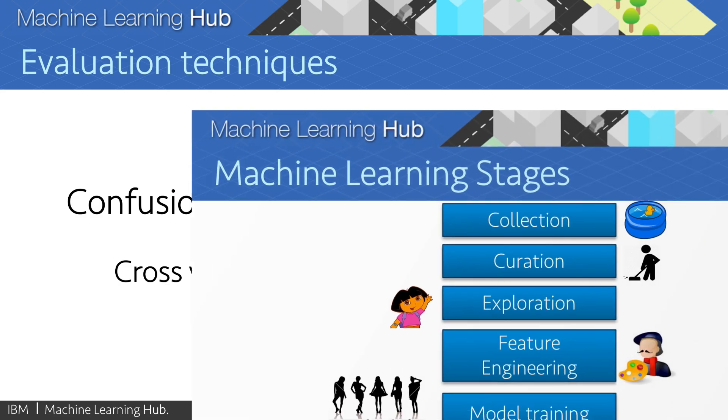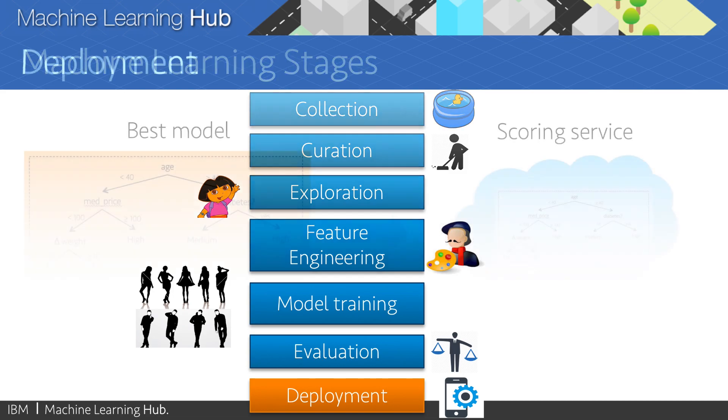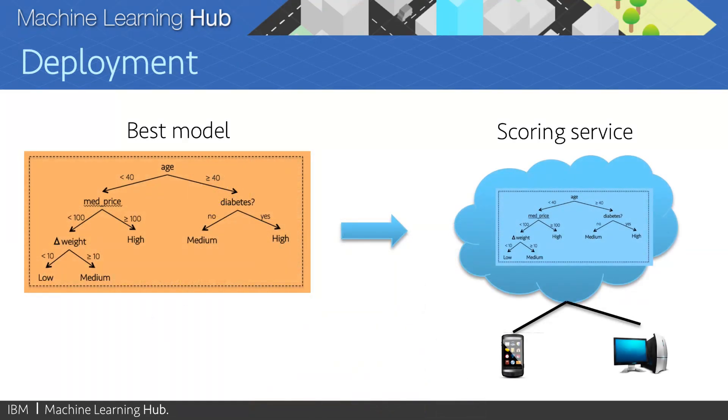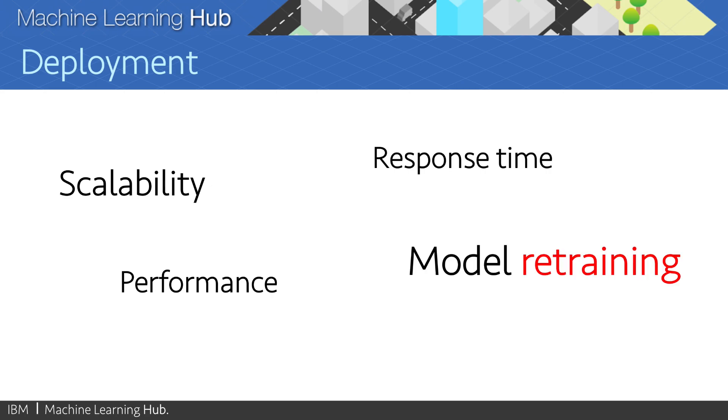Finally, once we have selected the best model, we need to deploy it, which means actually putting in production a machine learning model. Because in the end, what good is the most accurate model if it's only sitting on my laptop? The model is useless unless it is actually on the cloud making predictions in real time. And here, there are many challenges in terms of scalability, performance, response time, and model retraining.